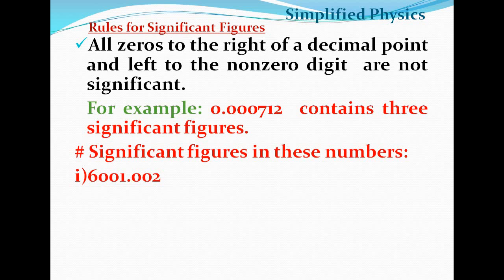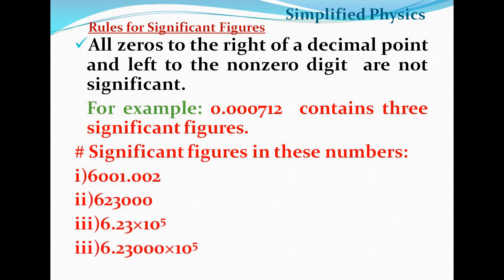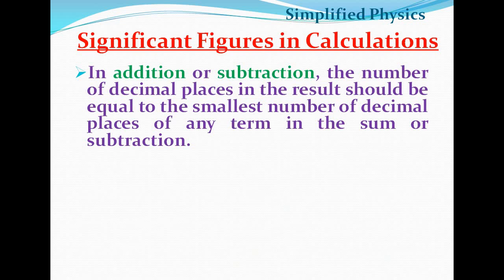Let's apply these rules. The number 6001.0002 has seven significant figures. In another example, trailing zeros that are not after a decimal give only three significant figures. The number 6.23 has three significant figures. In this way we can determine significant figures for any number.